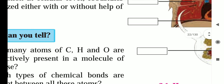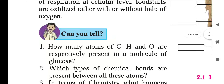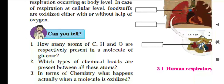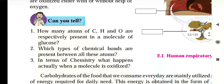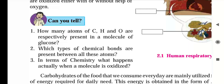So, can you tell how many atoms of carbon, hydrogen, and oxygen are respectively present in a molecule of glucose? All of you know that the formula of glucose is C6H12O6.